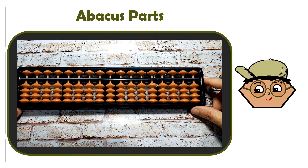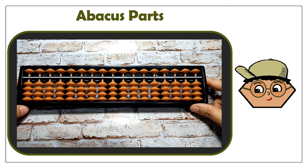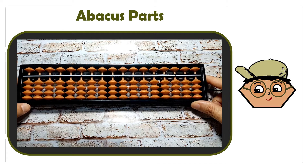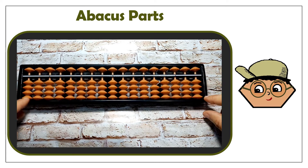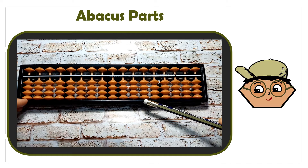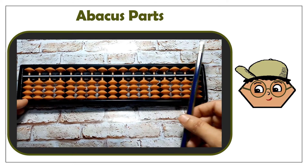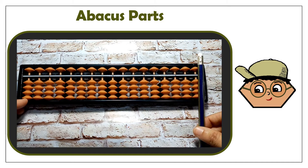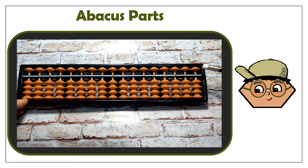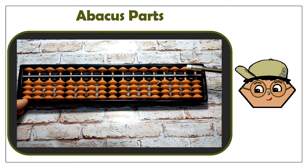Hello everyone, this is the Japanese Abacus. The main parts of it are as follows. We have this border which is called the frame. Then we got some columns — these columns are called rods. On each rod, you will find four lower beads and one upper bead.